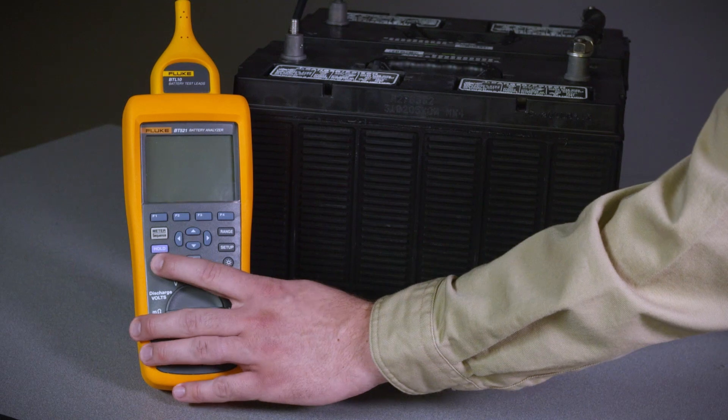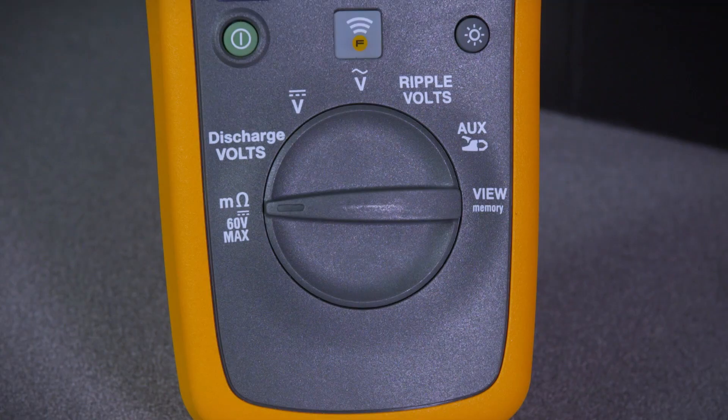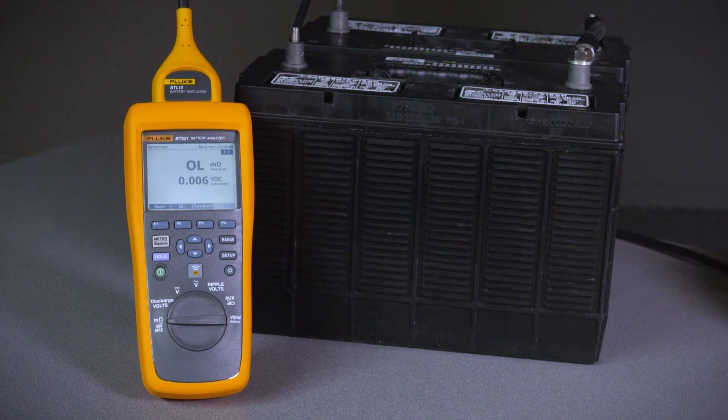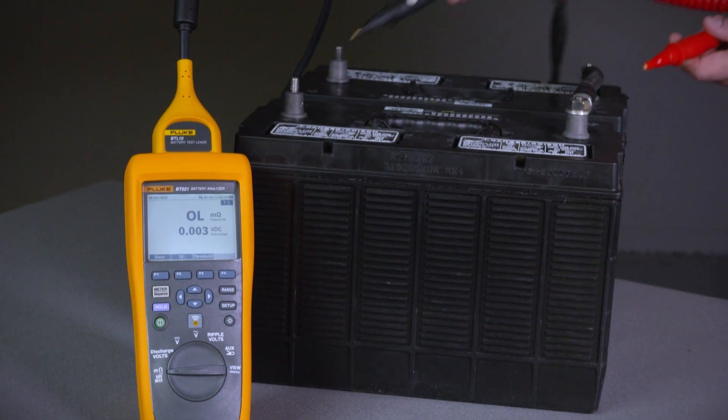Press the green power button to turn on your instrument. You can see that we're in the milliohm and voltage range. We now can make a measurement by connecting the probes to the battery.